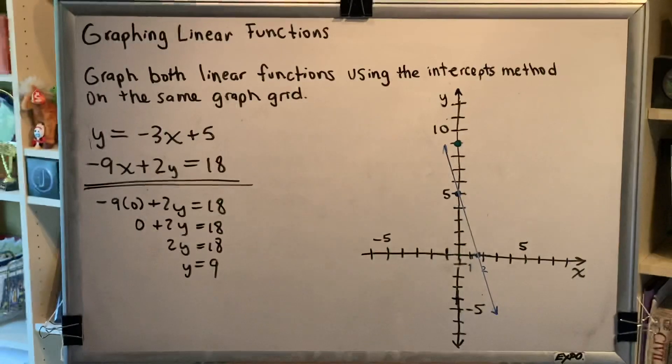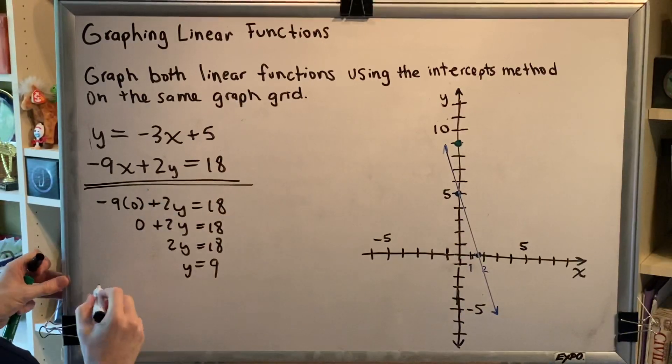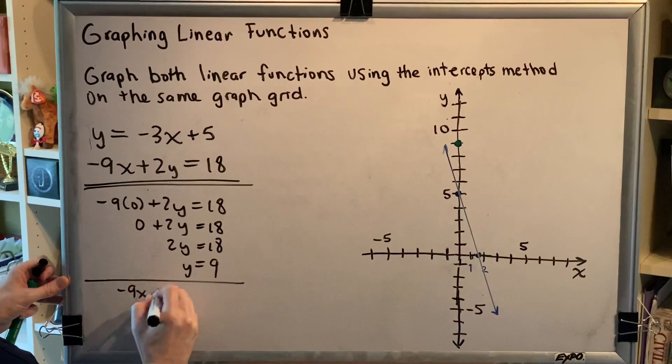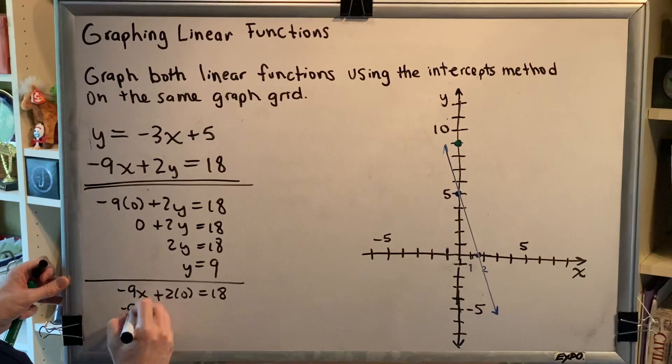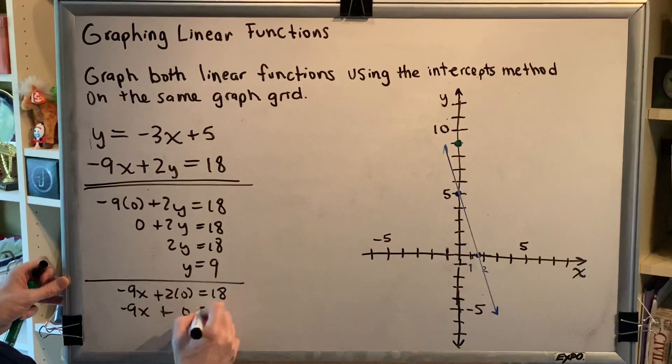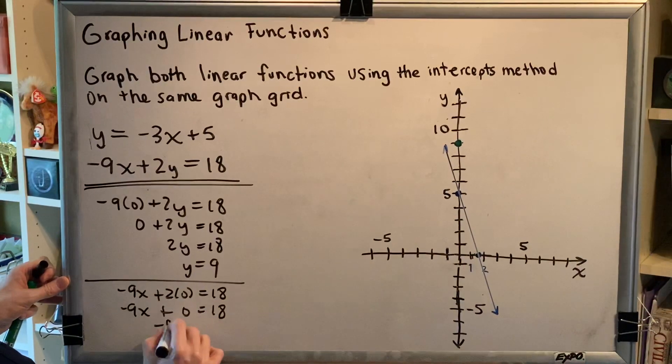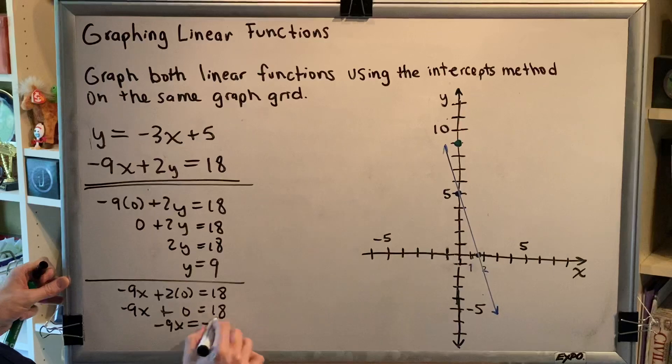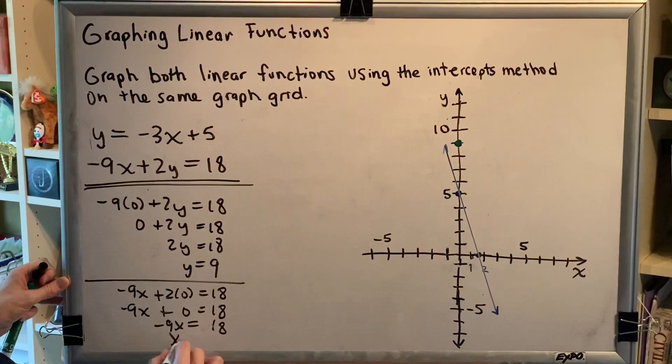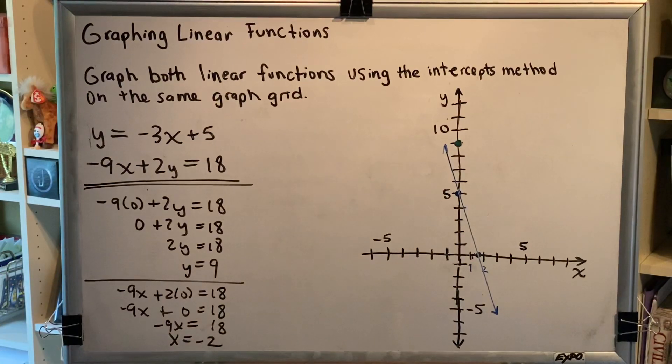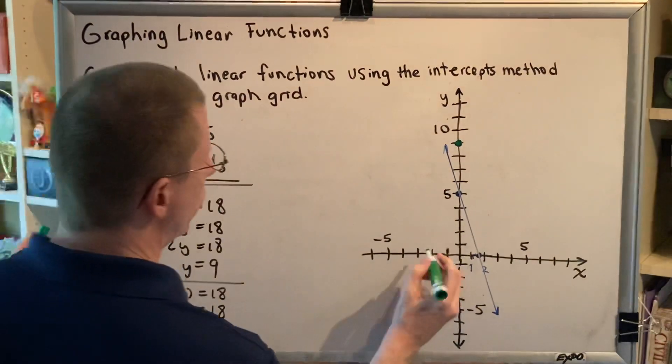Now repeating that same procedure, but this time replacing the y with zero. We'll have negative nine x plus two times zero equals 18. Negative nine x plus zero equals 18. Negative nine x equals 18. When you divide by negative nine on both sides, you get x equals negative two. So I'll plot x equals negative two.